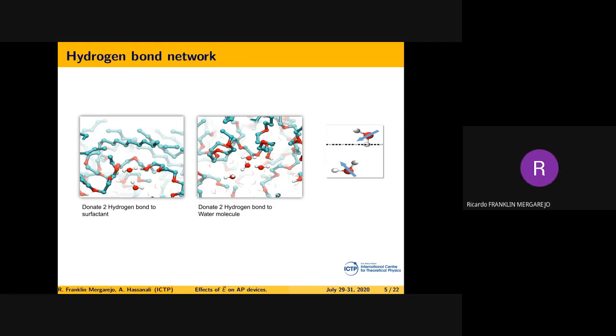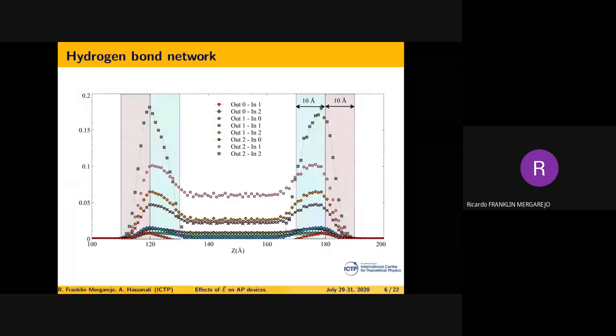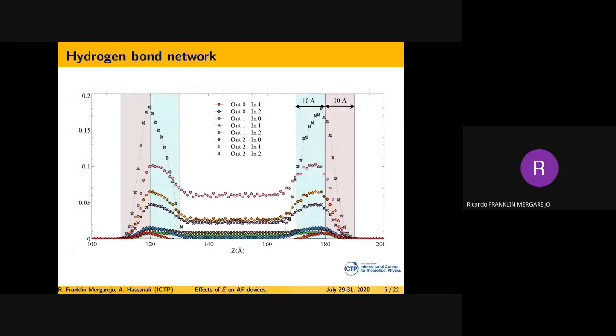We went to the hydrophilic part. Skipping all technicality, what strikes from this figure is that each curve represents a hydrogen bond network. Basically, what we saw is an enhancement of the hydrogen bond network, meaning that the surfactant acts very actively in changing or disrupting the normal water hydrogen bond network.